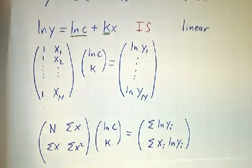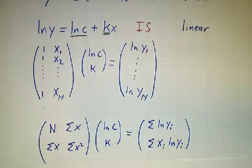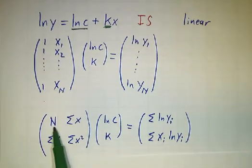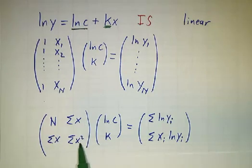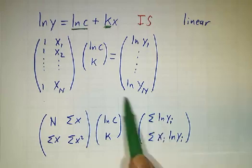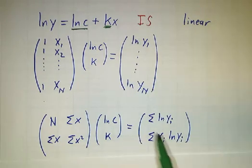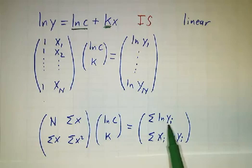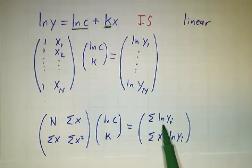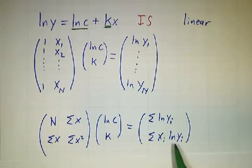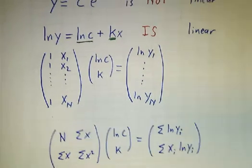If you look at A transpose A, it's just what it always was for a straight line fit: n, sum of x's, sum of x squareds. A transpose [log y] is like what we're used to doing for linear regression, except we have log y's instead of y's.